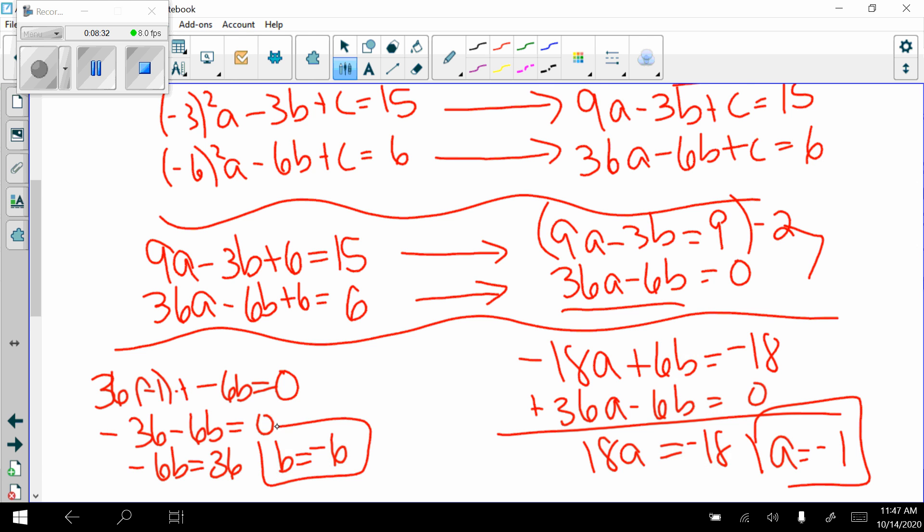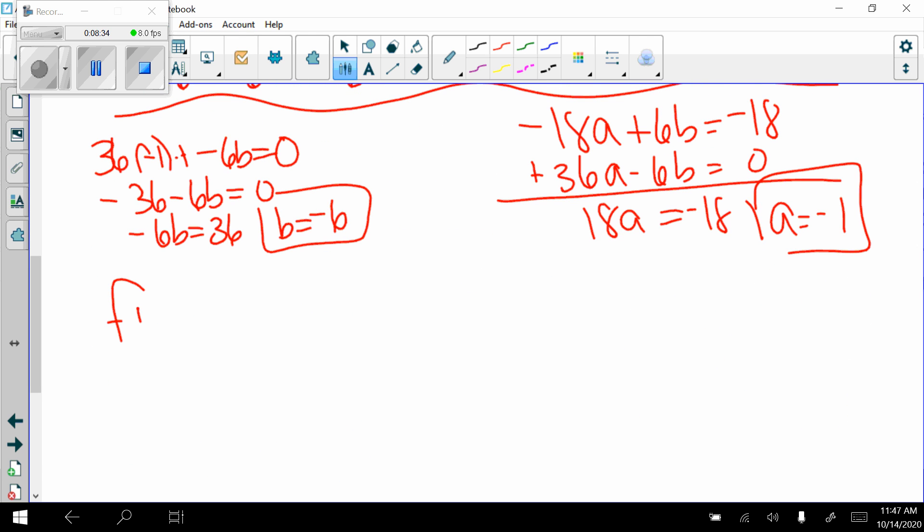So now I know what a, b, and c are. I can write the equation. The equation f of x equals a, negative 1. So negative x squared. B minus 6x and c was 6 plus 6. There's our equation.